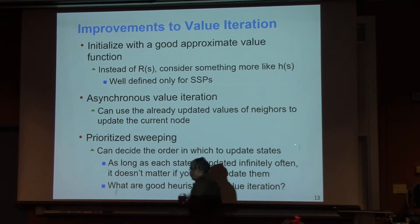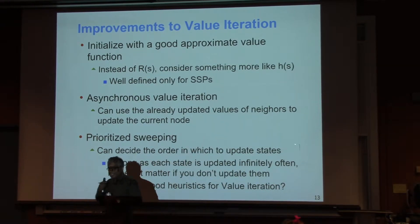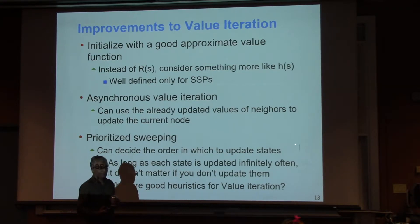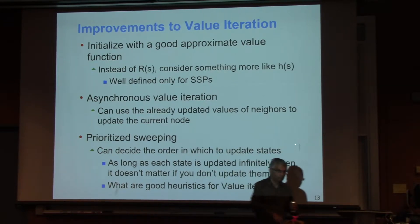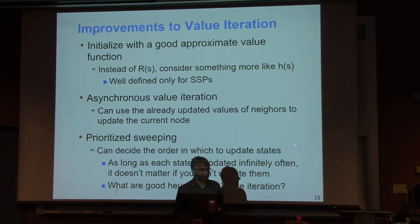Because if they're changing a lot, that means some interesting messages are coming from their far neighbors, and so they're more likely to change more. The guys who won't change much, you can update them later. If you do this, and as long as you update everybody infinitely often, if you update the ones which are changing faster earlier, then you can show that's the prioritized activity, and the prioritized activity will converge faster.